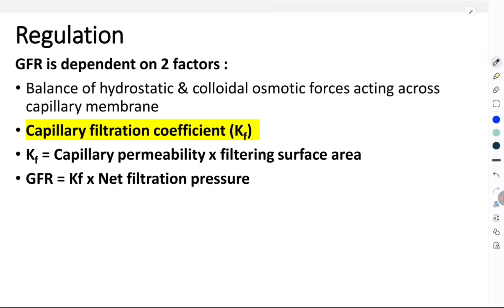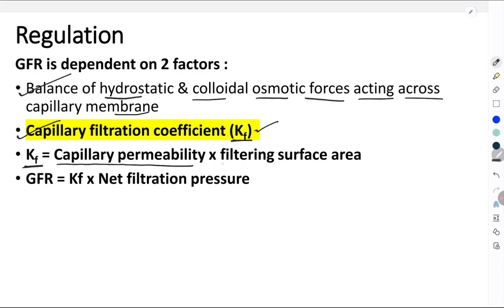Next let's understand the regulation. The regulation depends on two important factors. The first is the balance of the hydrostatic and the colloidal osmotic forces — also called the pressures acting across the capillary membrane. Second is the capillary filtration coefficient, represented as Kf. This capillary filtration coefficient in turn depends on two factors: capillary permeability and filtering surface area. If the filtering surface area is more or if capillary permeability is more, the capillary filtration coefficient increases, and if Kf is more that causes an increase in GFR.